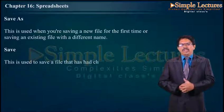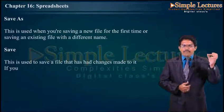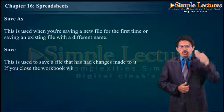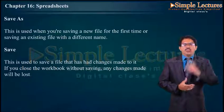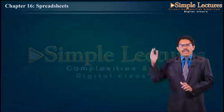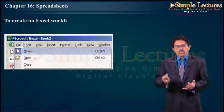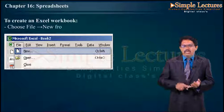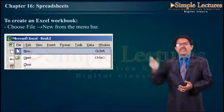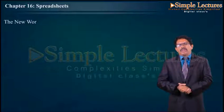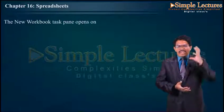Save: This is used to save a file that has changes made to it. If you close the worksheet without saving, all the changes will be lost. To create an Excel workbook, choose File, then New from the menu bar as given in the representation. The new workbook task pane opens on the right side of the screen.